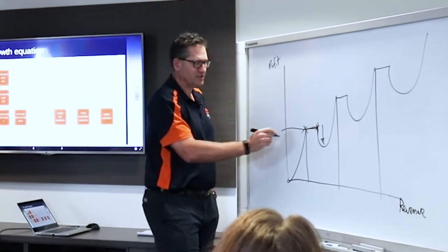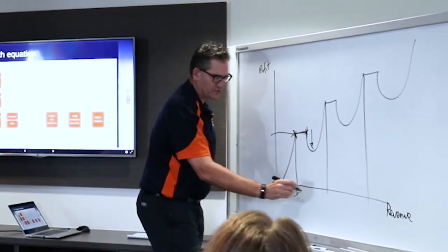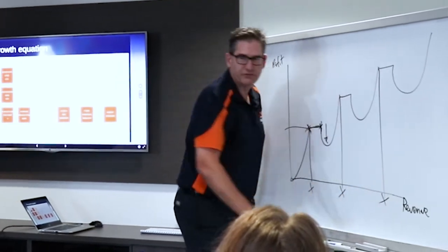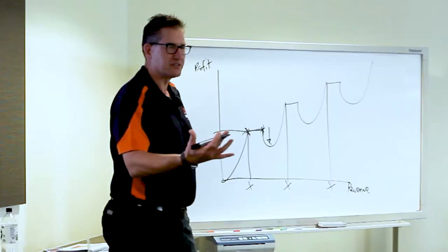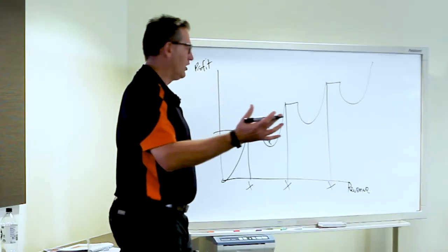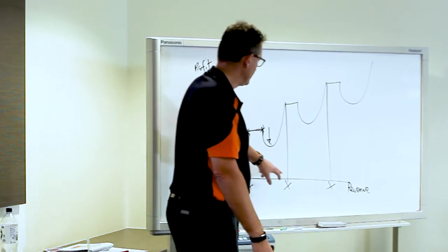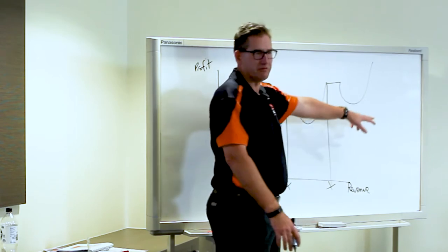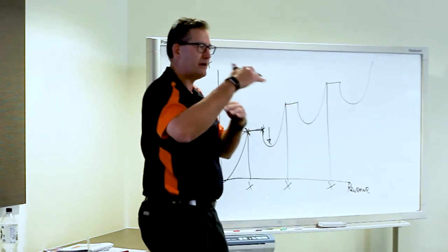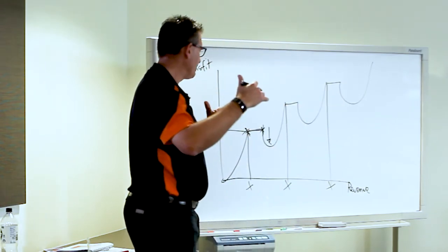What's really important to understand is you need to know what those numbers are in your individual businesses. They're going to be different for everybody. I know in my business that those triggers come at around $1 million, $4 million, $10 million, $25 million. I know that's where our bottlenecks come at key points.